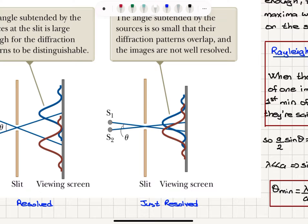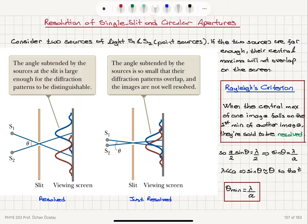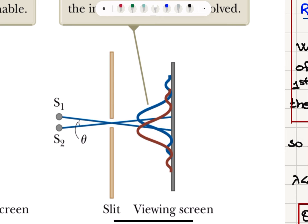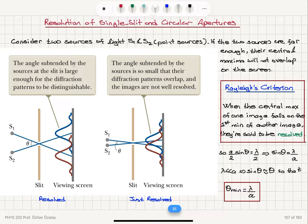So what is the condition for this just resolved case? The Rayleigh criterion for resolution of two sources is basically when the central maximum of one image falls on the first minimum of another image, they're said to be resolved. So we will have the maximum of one image falling on the minimum of the other image. So they should be coinciding on the screen for them to be just resolved.